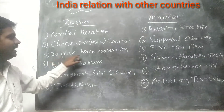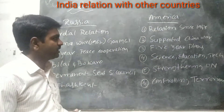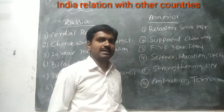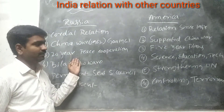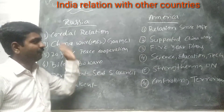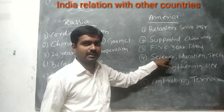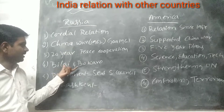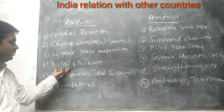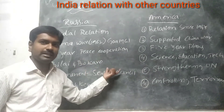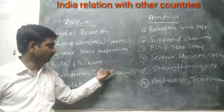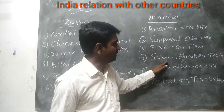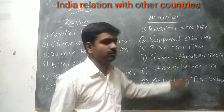India and Russia have a 20-year peace cooperation agreement. Russia has given complete support for the establishment of the Bhilai and Bokaro steel industries. America has given support to implement the five-year plans of India, and has also provided support in science, technology, and education development.